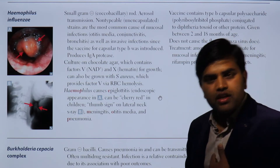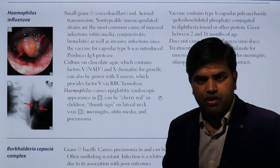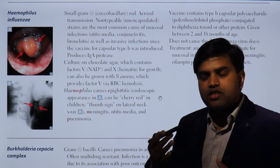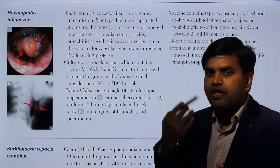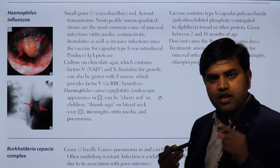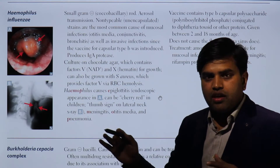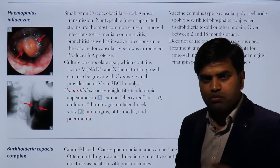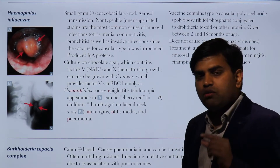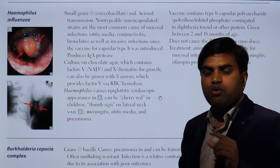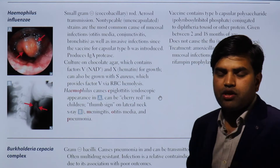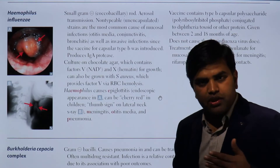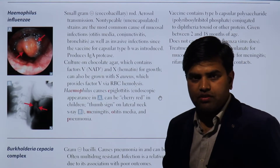Immunoglobulin A lies as a protective layer over the mucosal surfaces of the respiratory tract, GI tract, and genitourinary tract. Since Haemophilus influenzae mainly causes respiratory tract disease, when the bacteria produces this enzyme, it breaks down that protective layer, allowing the bacteria to easily enter the epithelial cells and cause infection.